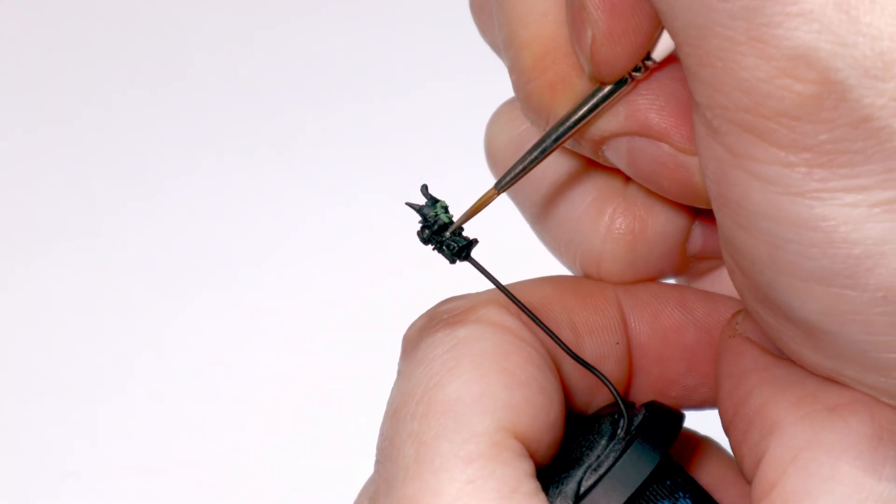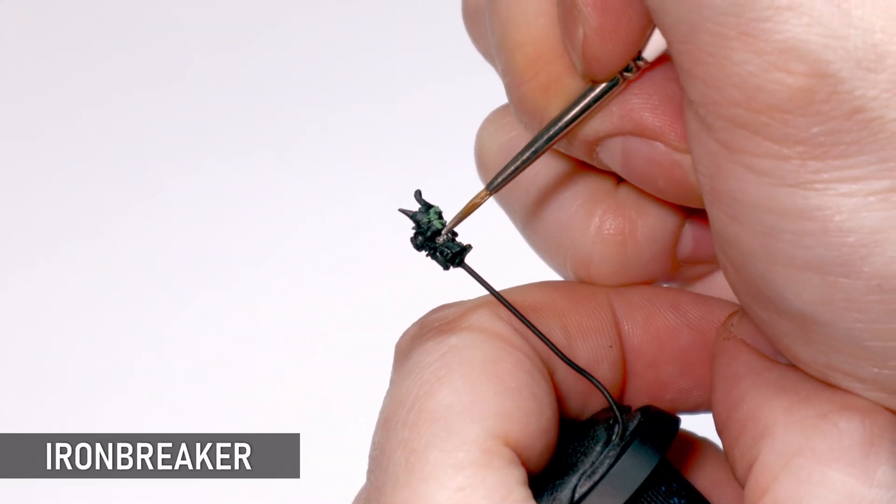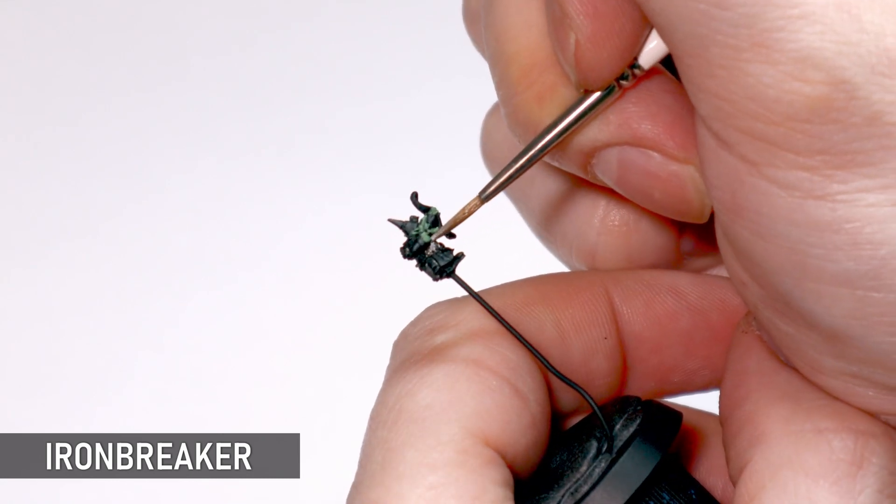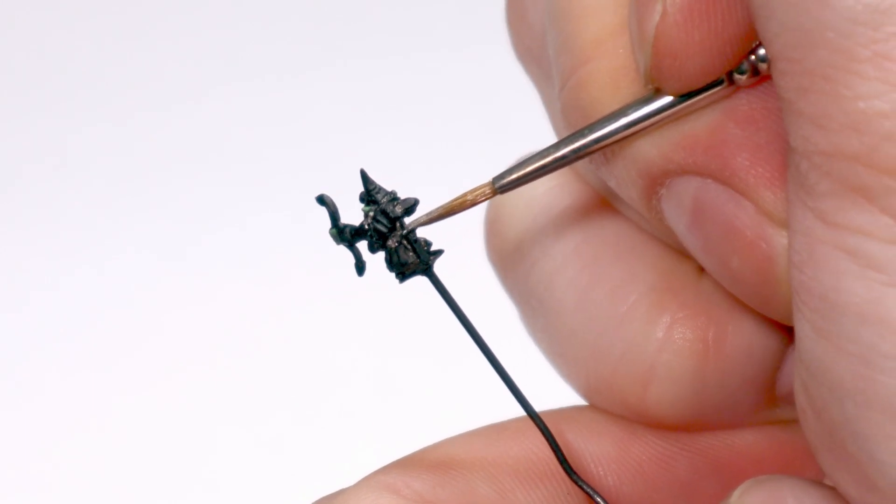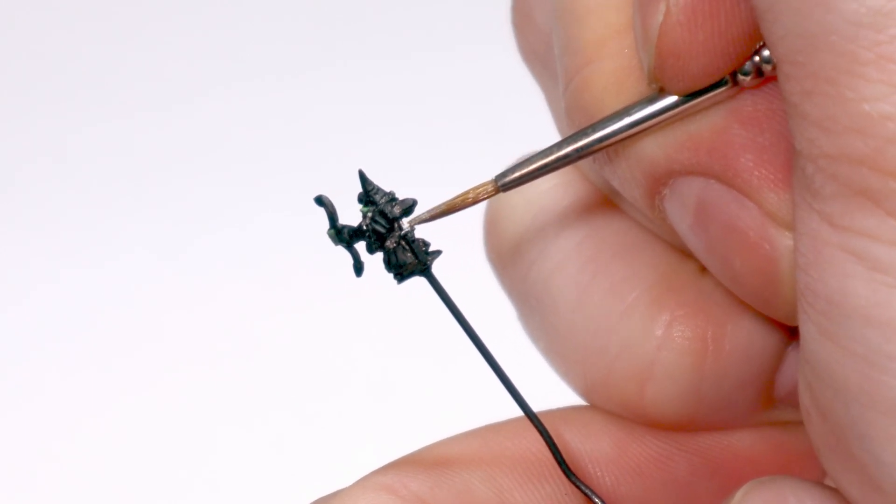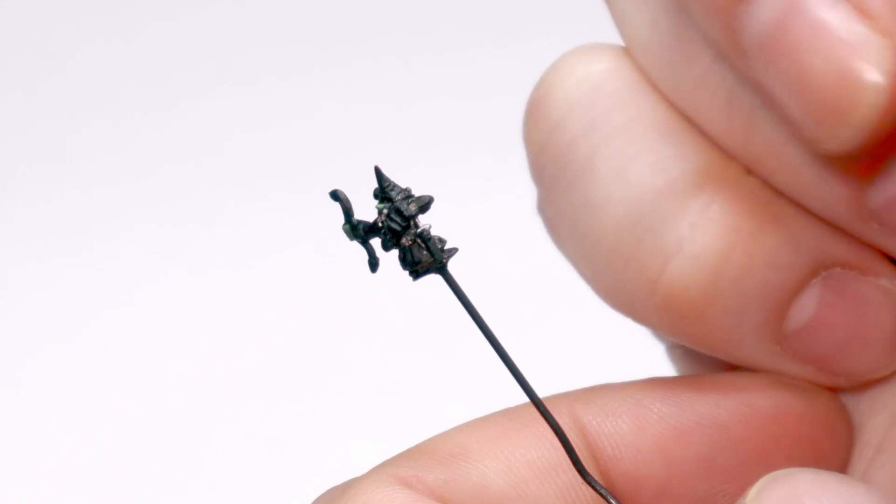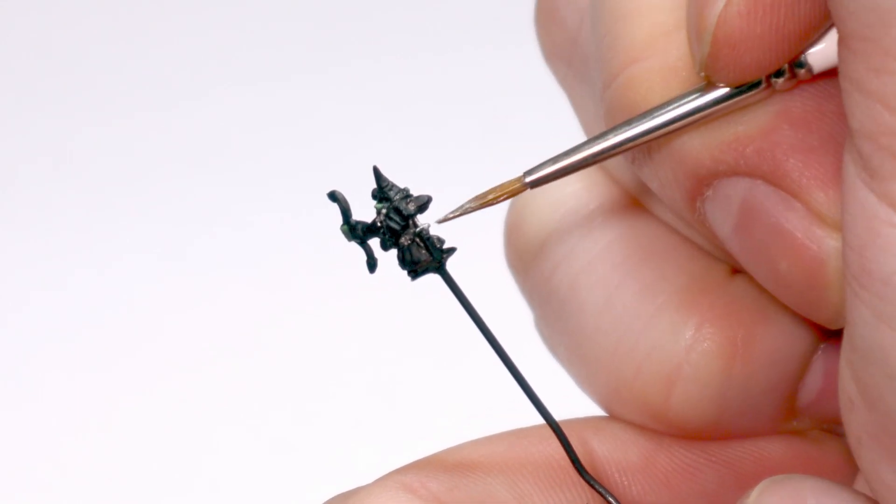I want to do an overbrush on this chainmail with Ironbreaker, so best to do that now before I've laid down any of the other colors just so it doesn't get too messy. I'm kind of freestyling this paint job in terms of the amount of layers and highlights I'm going to need. I may very well get carried away, but the metal should be fine with just a wash I reckon.